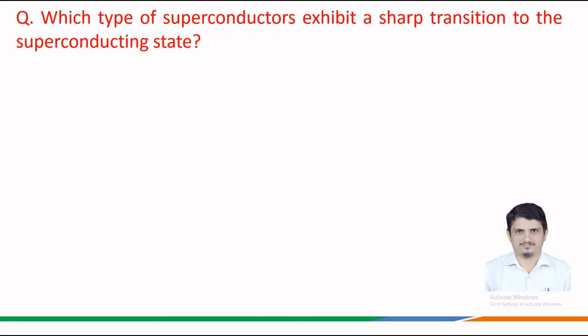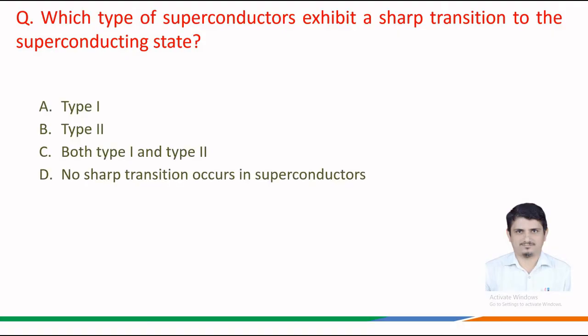Next question: which type of superconductors exhibit a sharp transition to the superconducting state? The options given are: option a, type 1 superconductors; option b, type 2 superconductors; option c, both type 1 and type 2 superconductors; and option d, no sharp transition occurs in superconductors.